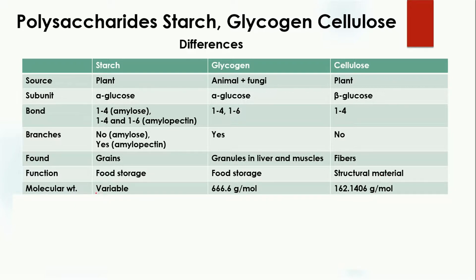The molecular weight of starch is variable, depending on how many amylose and amylopectin units are present. The molecular weight of glycogen is 666 grams per mole, while cellulose has a molecular weight of 162 grams per mole.